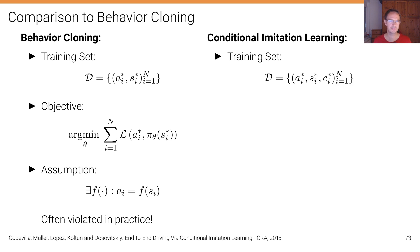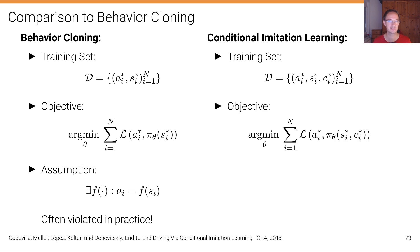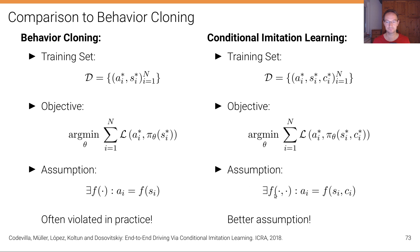In conditional imitation learning, the training set is augmented with the navigational control command. The dataset is now composed of triplets: for each frame we have the expert action, the expert state, and the corresponding navigational command from the GPS. The objective also changes — the policy now takes both s and c as input. The assumption is that there exists a function mapping s and c to a, which is a much better and more uniquely defined assumption.